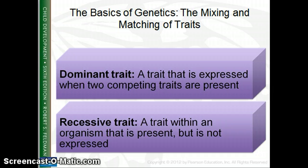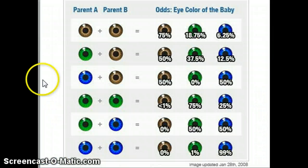When all these genes and chromosomes come together — some things from mom, some from dad — is it determined which trait we will have? The dominant trait is the trait expressed when two competing traits are present. The recessive trait is within an organism; it's there but you don't see it. Eye color combinations show what the odds are of a baby's eye color.